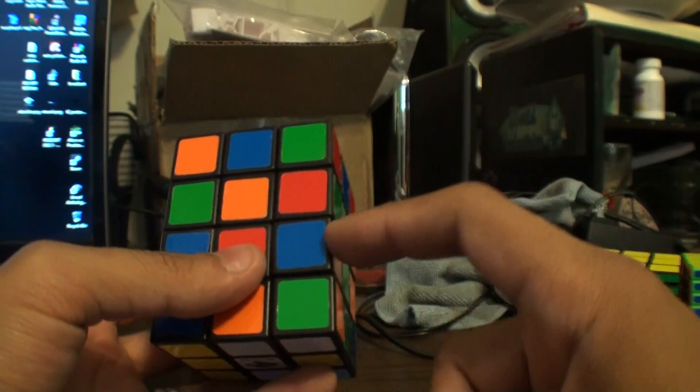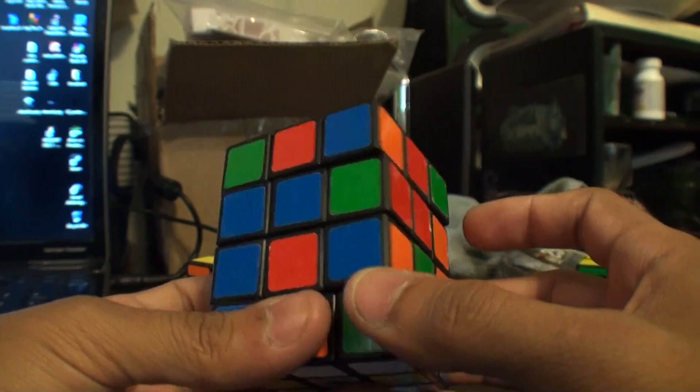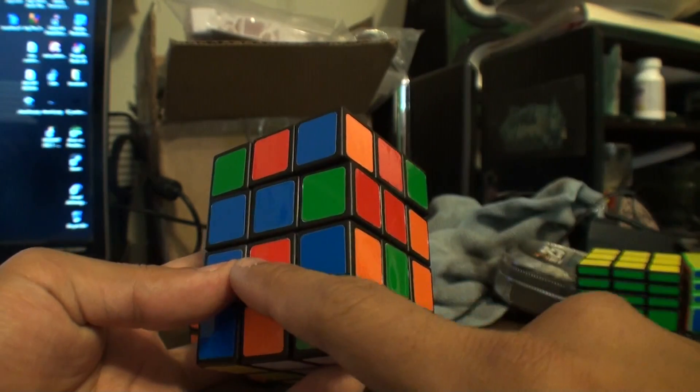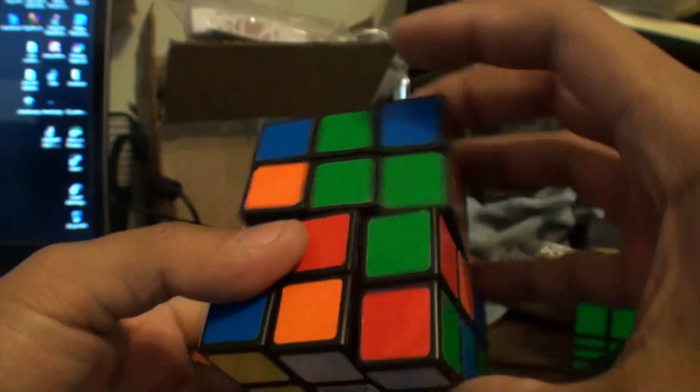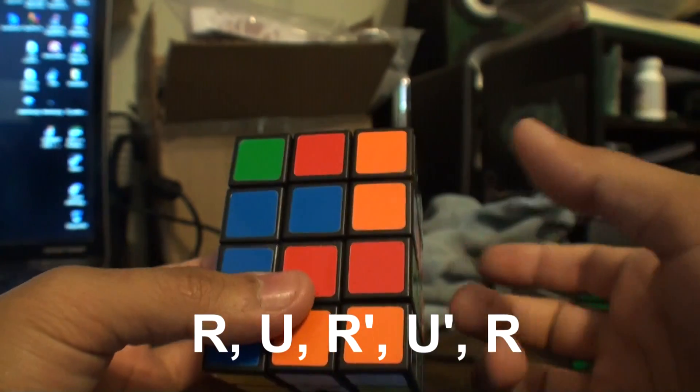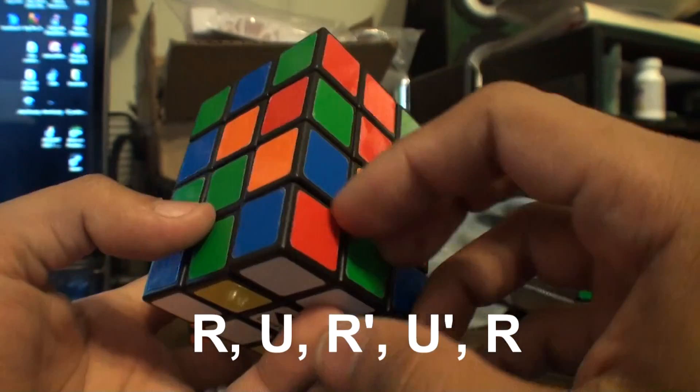Next, we're going to be filling in these corners. You should know the algorithms by now from the video that I directed you to. And you should have red and green, red and green. Remember they have to be opposites. So then you do the algorithm which is R U R' U' and then you fill all these corners in.